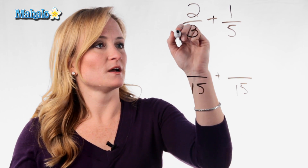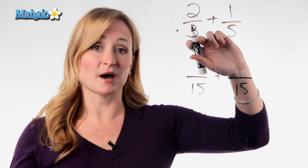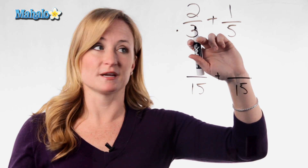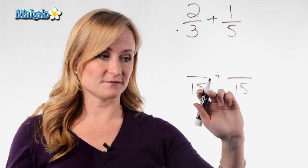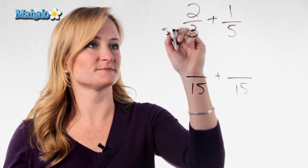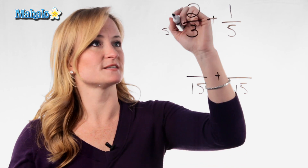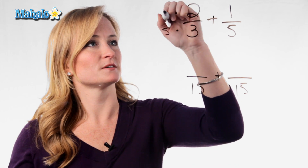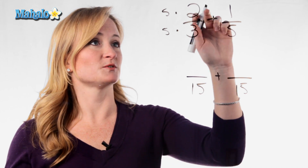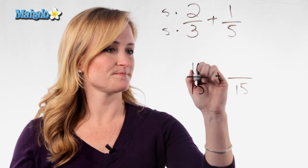This denominator, or bottom number, was a 3. How did I make it a 15? Multiply it by 5. And what you do to the bottom, you must do to the top. So 2 times 5 is 10.